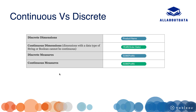Both dimension and measure can be continuous or discrete. A discrete dimension is represented by blue color and a continuous dimension is represented by green color, but string and boolean data types cannot be continuous. Similarly, a discrete measure is represented by blue color and a continuous measure is represented by green color.